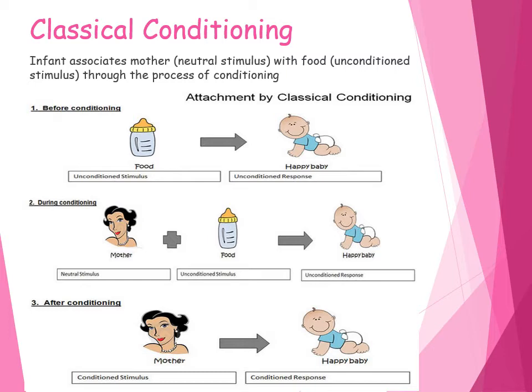During conditioning, the mother (neutral stimulus) is paired with food because she is feeding the infant (the unconditioned stimulus), which leads to the unconditioned response of a happy baby. With enough pairings, the infant associates the mother with food. So the mother becomes the conditioned stimulus that produces the conditioned response of a happy baby.